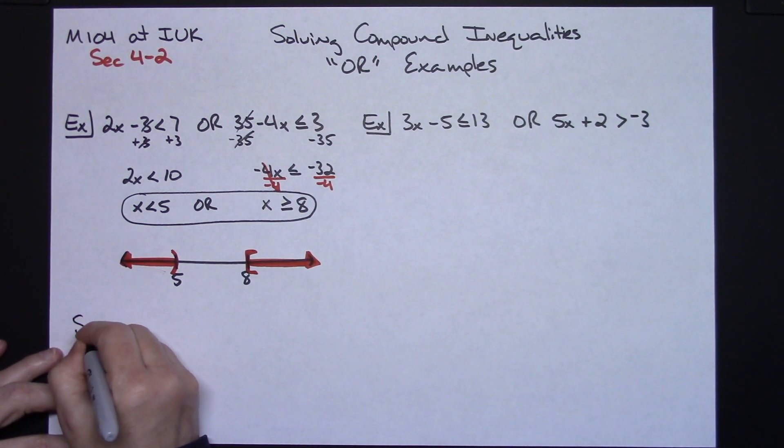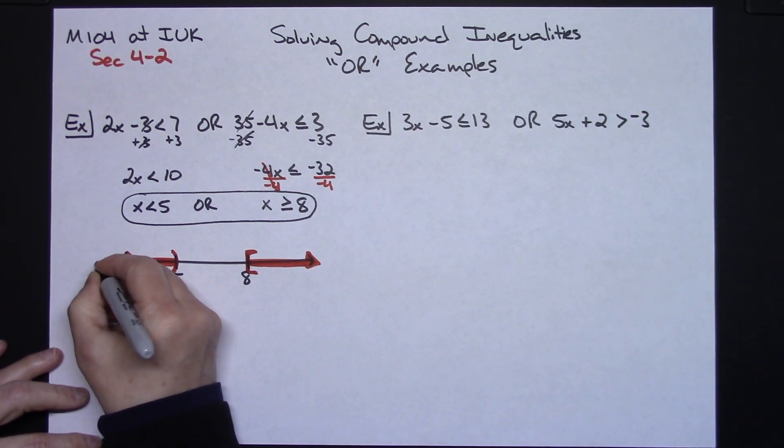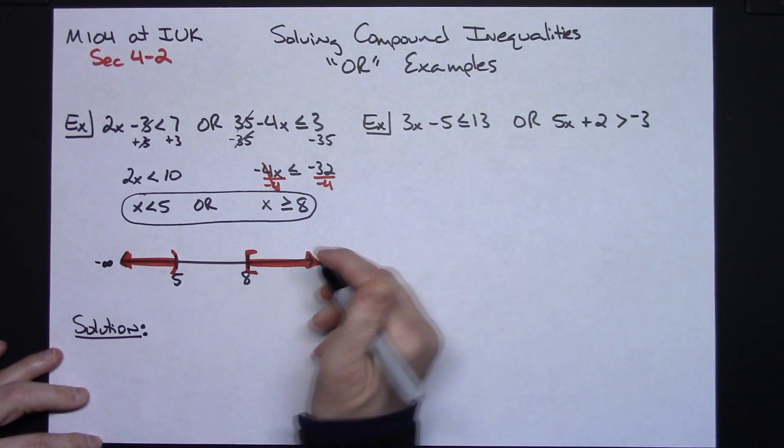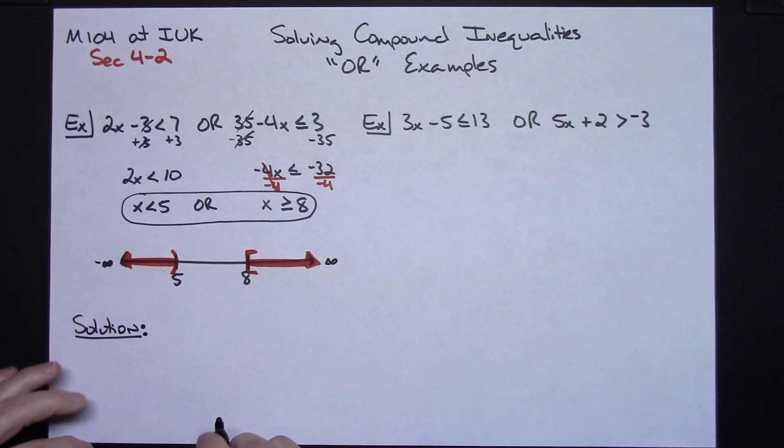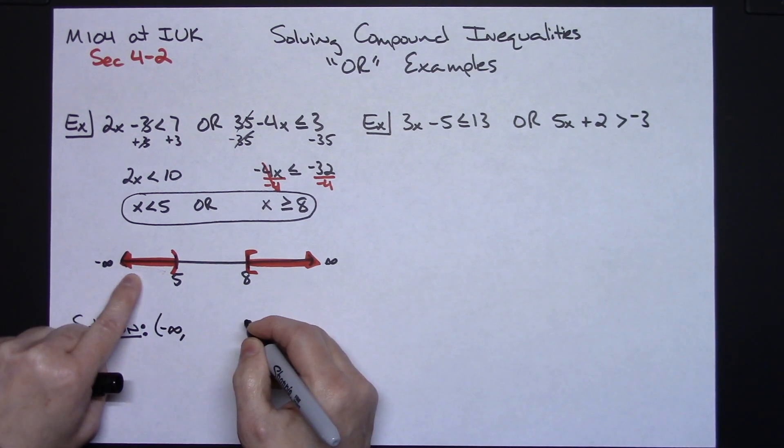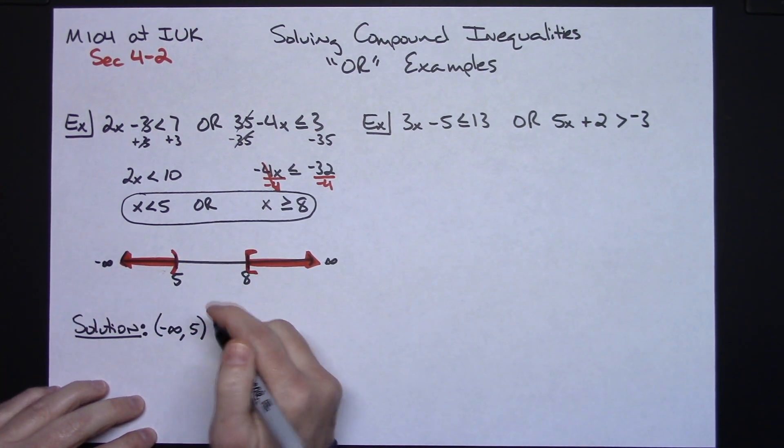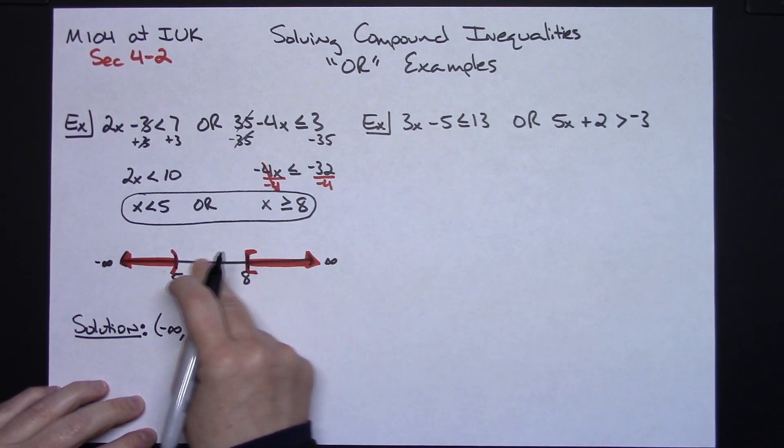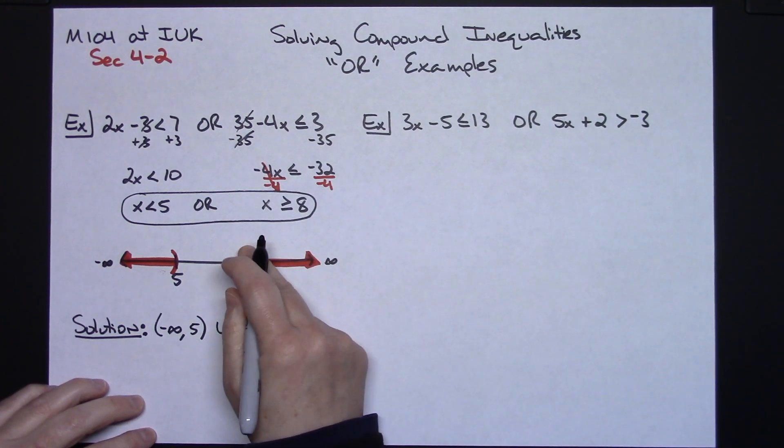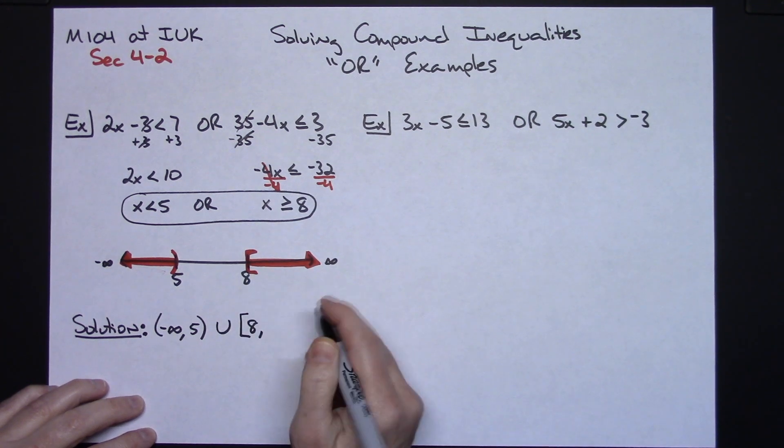So a solution here in terms of interval notation. We all know that negative infinity is down here on the number line. Positive infinity is here on the number line. So curvy bracket negative infinity all the way up to 5. Curvy bracket on 5 because I do not want to include it. I'm going to skip over this section of the number line. So I'm going to union. I want to include 8, so square bracket and then all the numbers up to positive infinity.